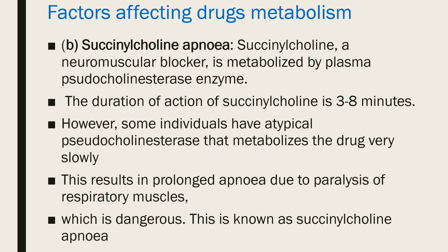Another example of genetic factors affecting drug metabolism is succinylcholine apnea. Succinylcholine is a neuromuscular blocker metabolized by plasma pseudocholinesterase — it is normally metabolized within two to eight minutes. However, some individuals have atypical pseudocholinesterase that metabolizes the drug very slowly. As a result, prolonged apnea occurs due to paralysis of the respiratory muscles — a dangerous condition known as succinylcholine apnea.